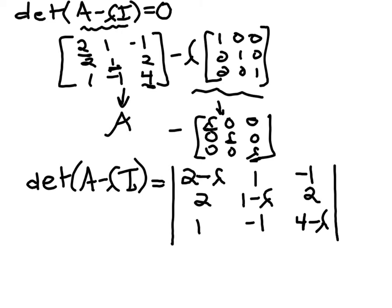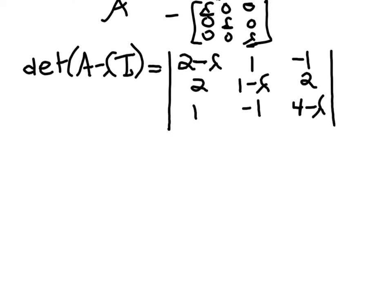To find the determinant of this 3 by 3 matrix, we can do cofactor expansion along any row or column. Using row operations to make this a triangular matrix doesn't go well for this A minus lambda I matrix, because when you're dealing with the variable lambda inside your matrix, it makes it very tricky to perform those row operations — things get very messy. So you're best off just doing the cofactor expansion.